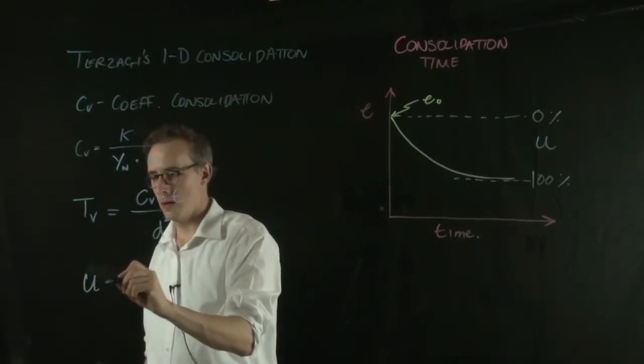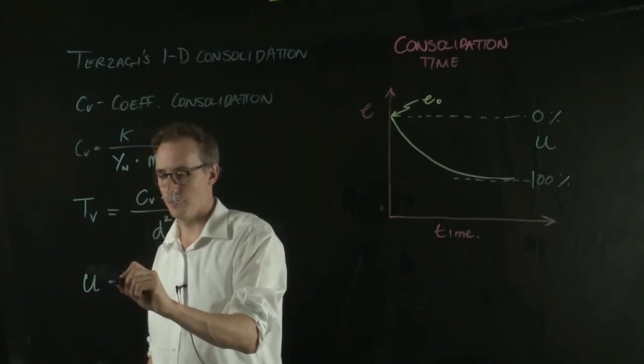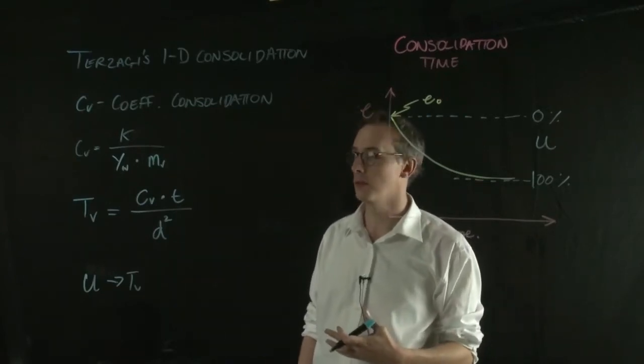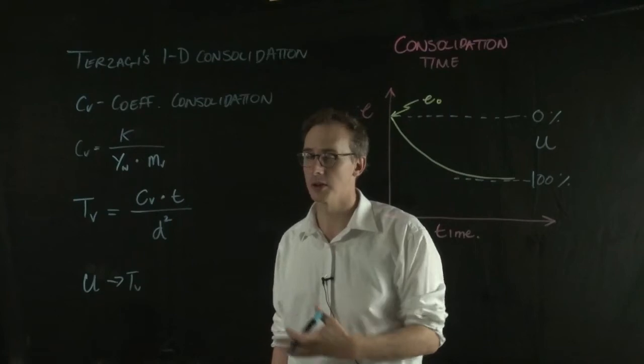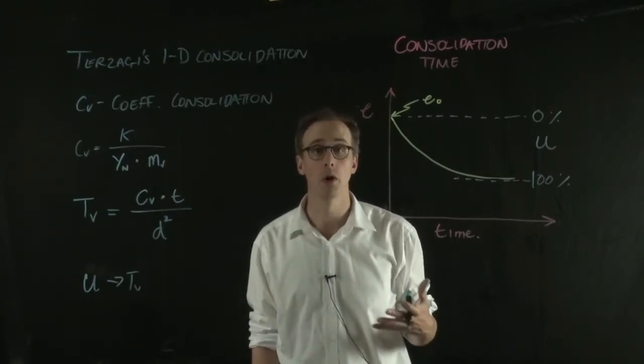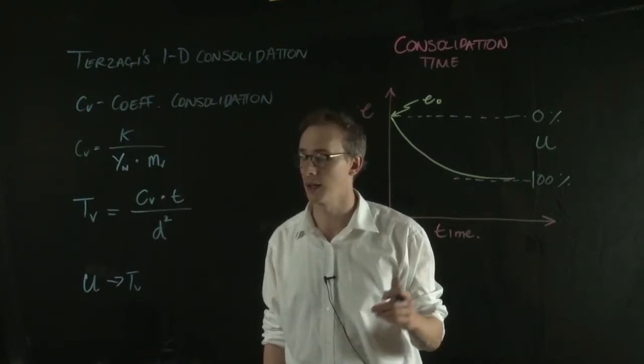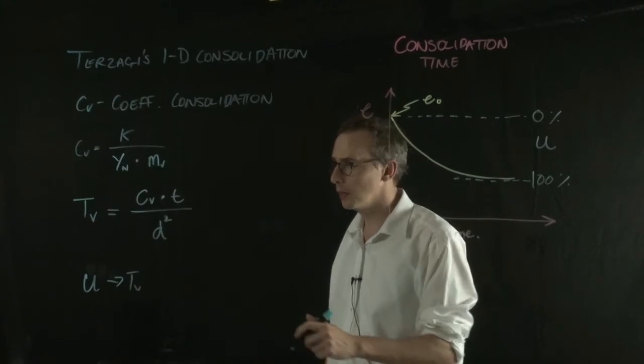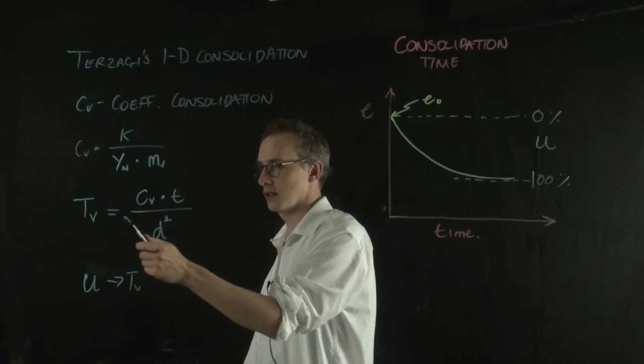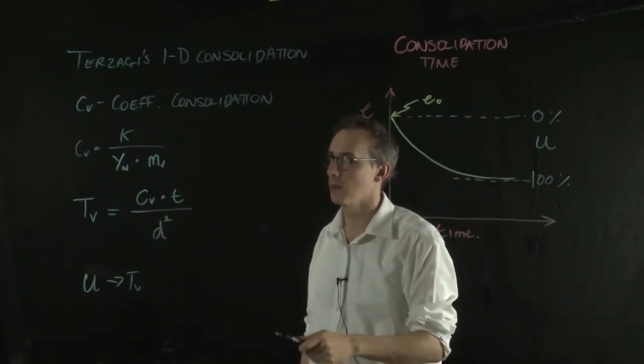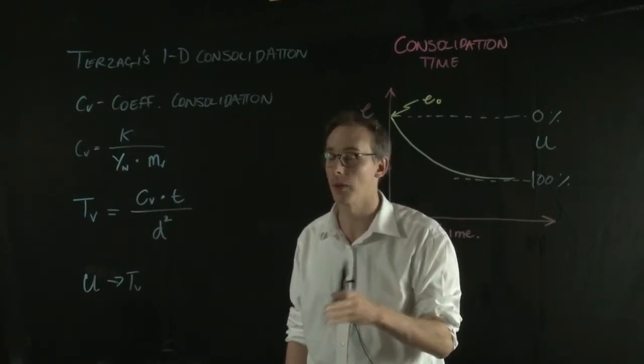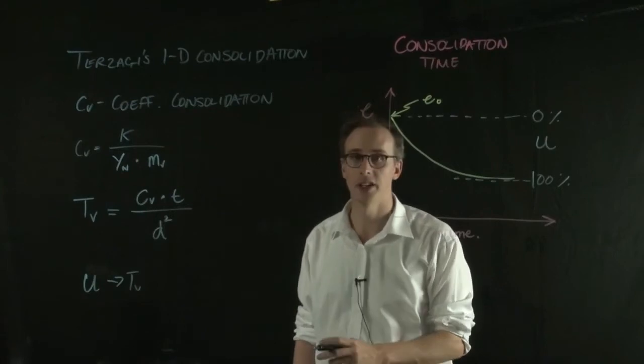The time factor is related to U, the degree of consolidation. You can relate U to the time factor, and you can do it either through formulae, and there's a bunch of different formulae available for that. There's also some tables that help you relate those two things together, and I've stuck both on my website on the link below. What this is saying is that essentially the TV, which is related to the U, the degree of consolidation, is equal to this coefficient of consolidation, the time it takes, or the time that we're examining this consolidation, and the drainage pathway squared.